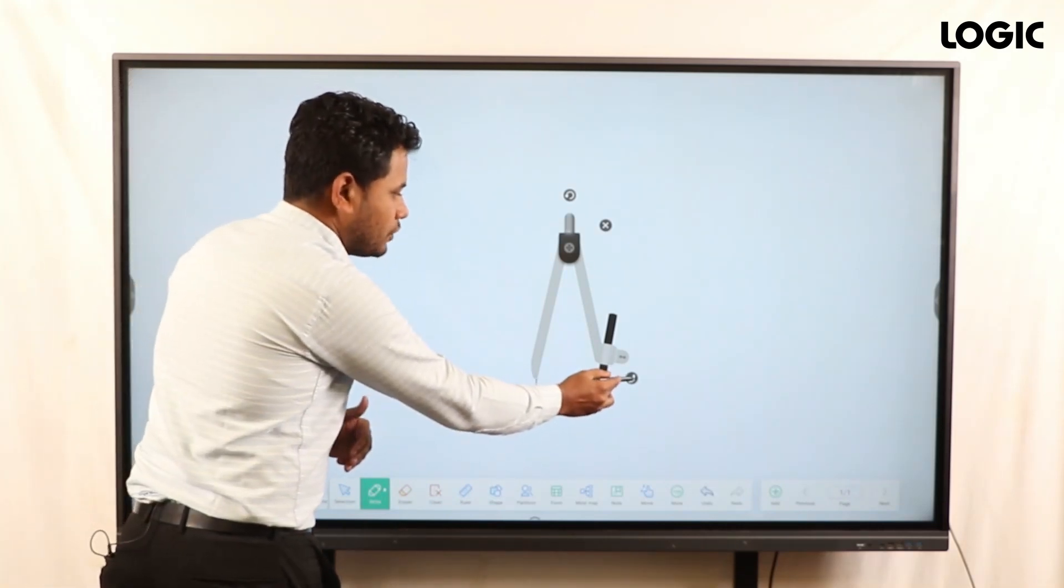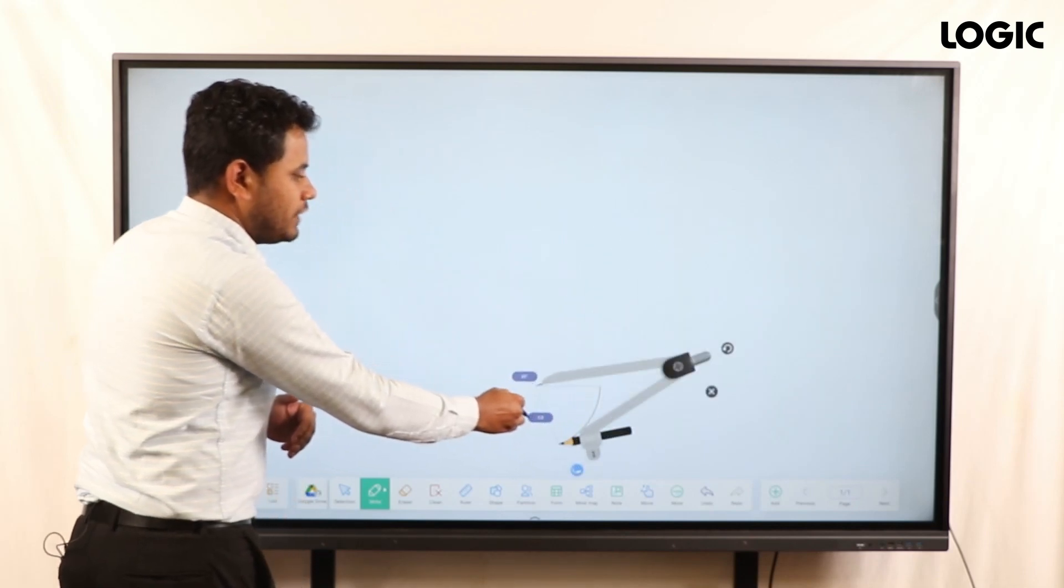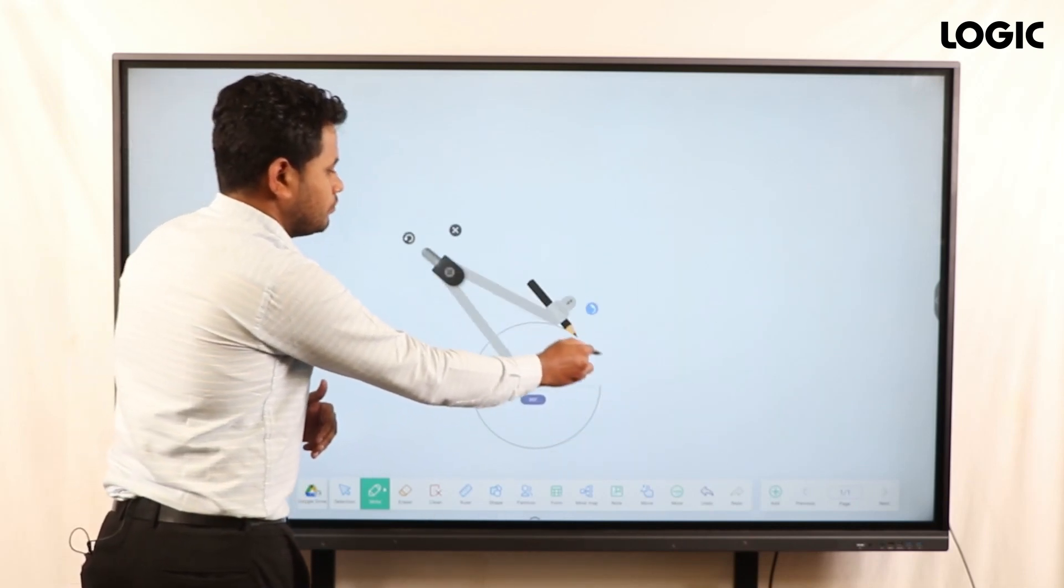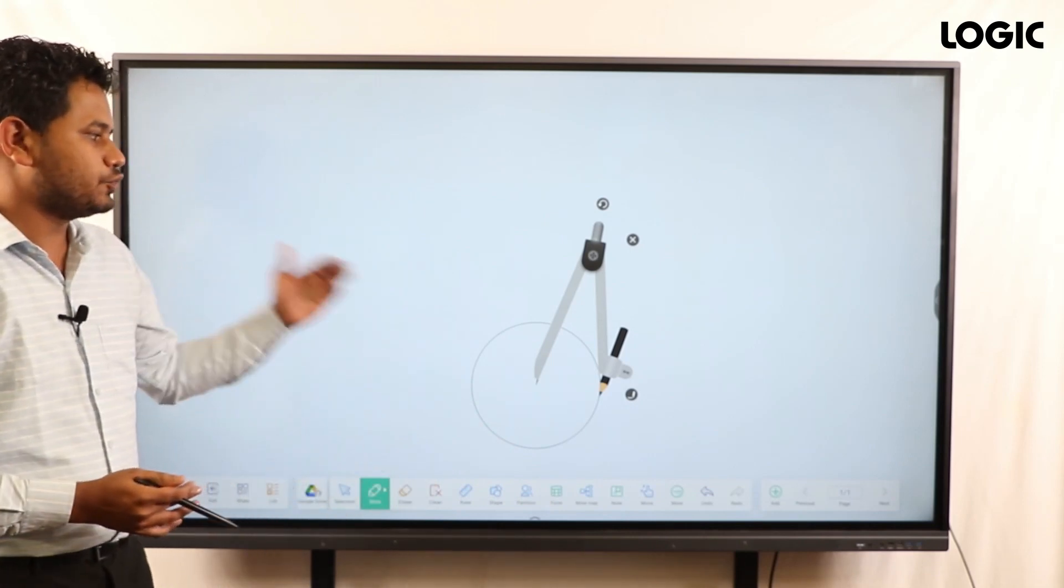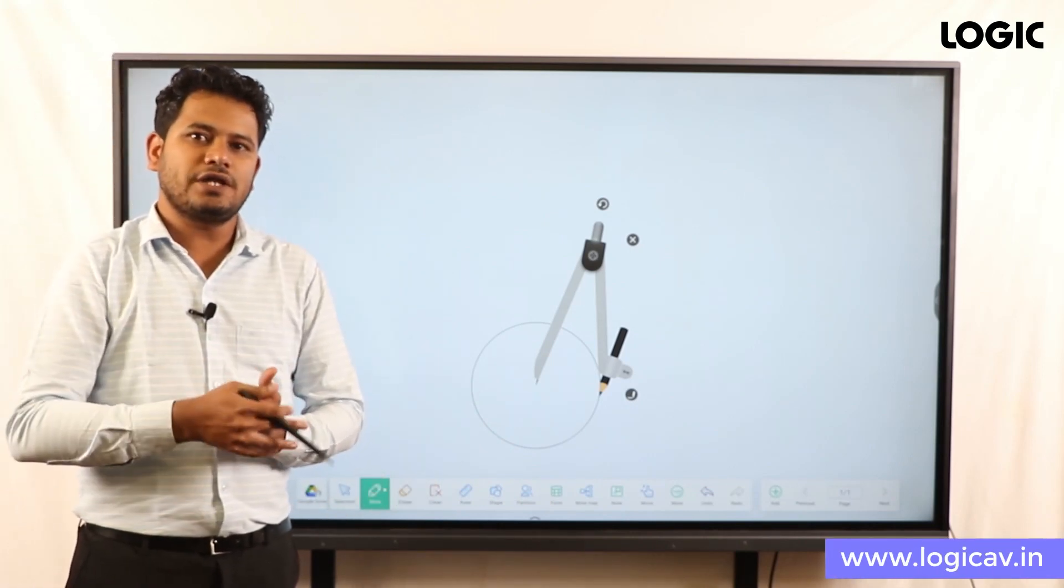Let me tap on the pen option here and freely you just move your stylus around the compass. That's it, easy to draw a circle or it might be an arc, so you can use these options easily.